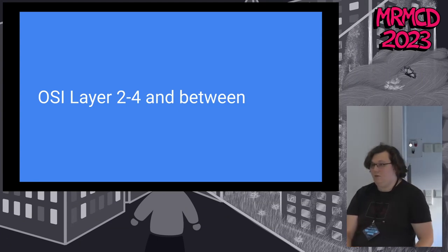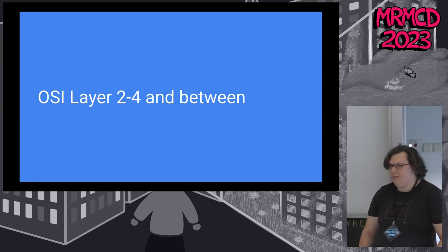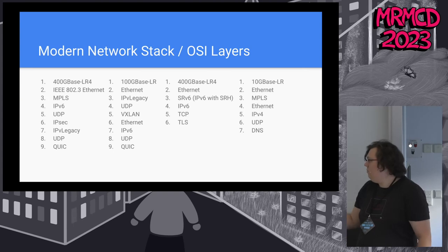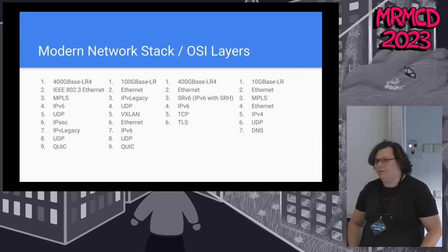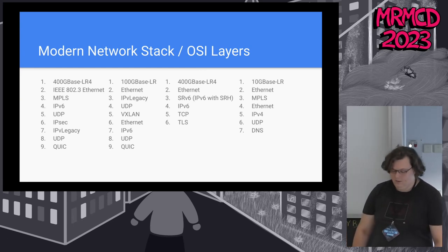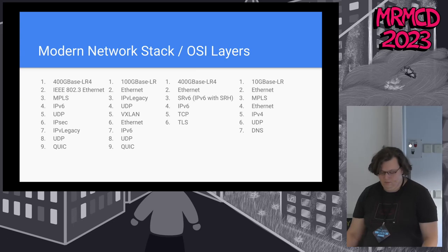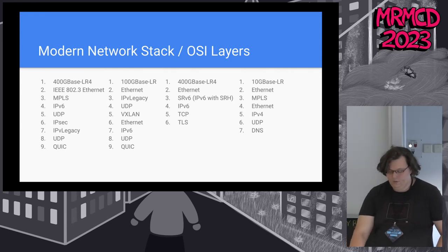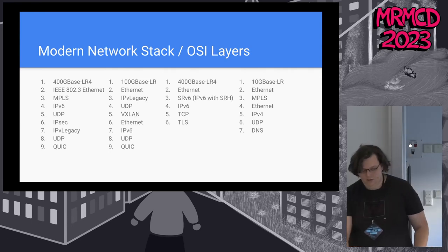Today, or nowadays, we don't run the classic OSI layers anymore. We have layers in between. This is what the network provider sees when they log into the network stack. We run, for example, EVPN with VXLAN or MPLS or segment routing and have different encapsulation in this stack.